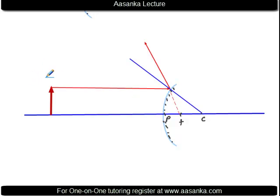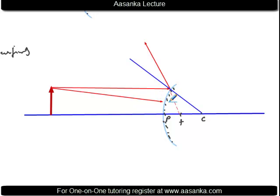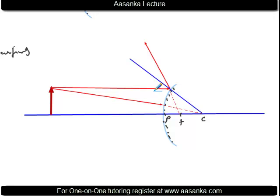We need a second ray to locate the image, since two rays intersect or appear to intersect at the image point. We intelligently use the property of the center of curvature — the second ray appears to be going toward the center of curvature. Such a ray returns on its own path because the angle of incidence is zero, so the reflected angle is also zero. Where the two rays appear to cut gives the image tip.